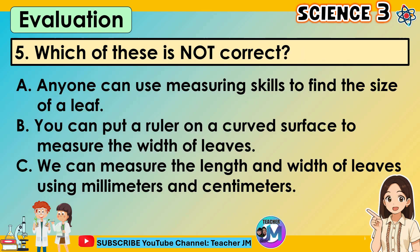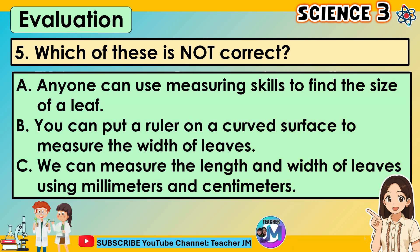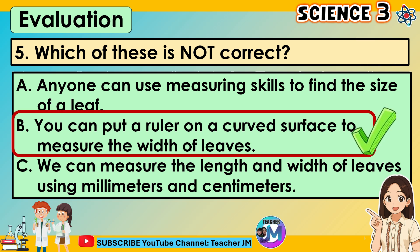Question 5: Which of these is not correct? A. Anyone can use measuring skills to find the size of a leaf. B. You can put a ruler on a curved surface to measure the width of leaves. C. We can measure the length and width of leaves using millimeters and centimeters. The correct answer is letter B.